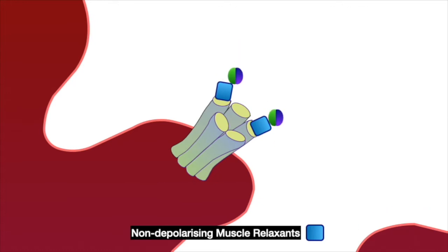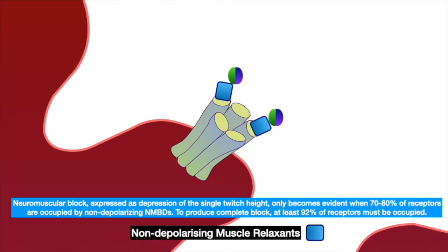Here you can see that acetylcholine is denied receptor sites to occupy. With antagonist block, there is a gradual reduction in the end plate potential until it fails to reach the threshold to fire off a propagating action potential to produce muscle contraction. Neuromuscular block, expressed as depression of single twitch height, only becomes evident when 70 to 80 percent of receptors are occupied by the non-depolarizing neuromuscular blockers. To produce complete block, at least 92 percent of receptors must be occupied.